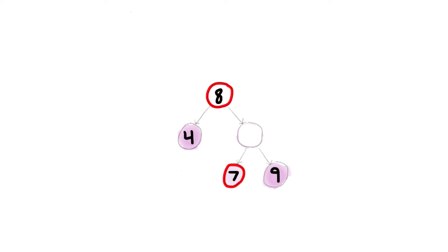which would violate the left is less, right is more structure of the binary search tree. The tree will only be valid if seven replaces the deleted item, because seven is the smallest of the greater numbers.